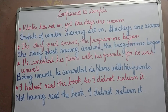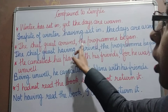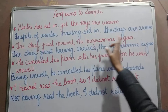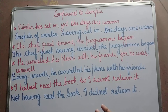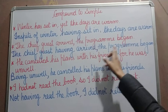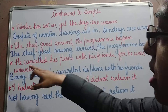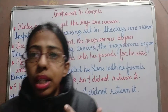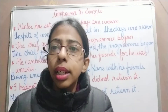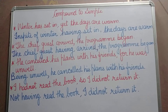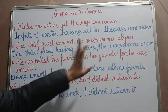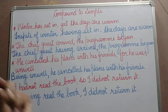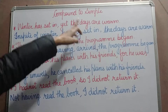Second example: 'The chief guest arrived, the program began' is your compound sentence. Converted: 'The chief guest having arrived, the program began.' Infinitives, gerunds, and participles are not verbs — they look like verbs but they are verbals. So 'having arrived' is a verbal, not a verb. We have changed it into a simple sentence with one subject and one verb.